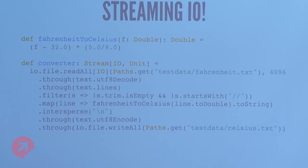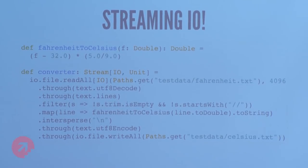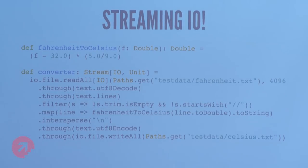Here's an example of data processing with streams — from the readme. I've got this Fahrenheit-to-Celsius conversion. I'm doing readAll on a file, then passing it through something that will decode to UTF and split into lines, remove empty lines and comments, transform each line, add a newline, re-encode to bytes, and write to a file. ReadAll returns a stream, so what's actually happening is that it's emitting one chunk of the file at a time — completely transparent from the user. You see the same kind of high-level code you had with IO and List, but now it's streaming. That's what we mean by streaming IO: the ability to operate in constant memory.